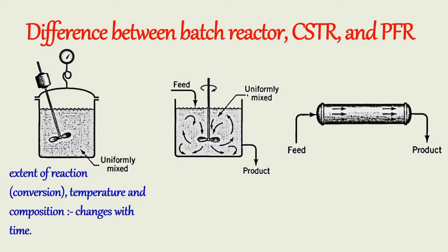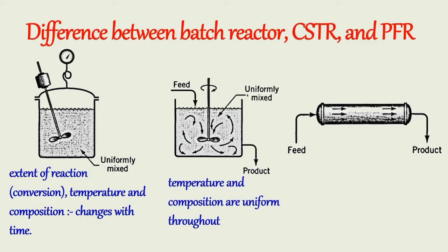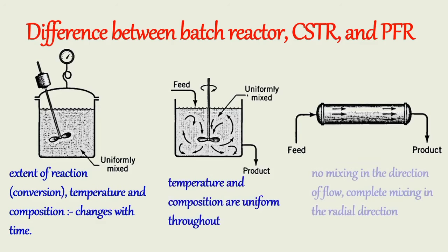In CSTR, contents are well stirred so that the properties of the reaction mass, such as temperature and composition, are uniform throughout. Hence the exit stream from the reactor has the same composition as the fluid within the reactor. In PFR, there is no mixing in the direction of flow and there is complete mixing in the radial direction. Hence in the axial direction, the elements of fluid of the reaction mass act independently of each other — each one has different composition and temperature. This type of flow pattern is called plug flow. Therefore in a plug flow reactor, the extent of reaction, temperature, and composition may vary with the position in the reactor.